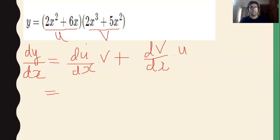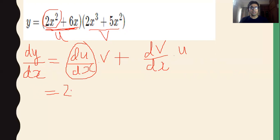First of all, we will find du/dx. We will differentiate this whole term. We have learned basic differentiation so we will do it directly. Differentiating the first function: 2 is constant, so the derivative of x² is 2x, giving us 2·2x. Plus the derivative of 6x gives 6. So du/dx is obtained.